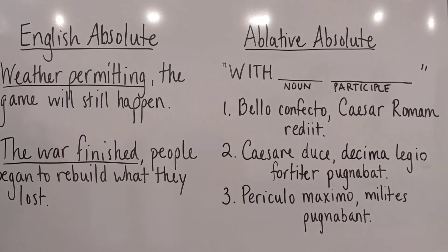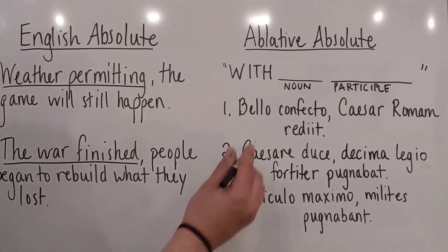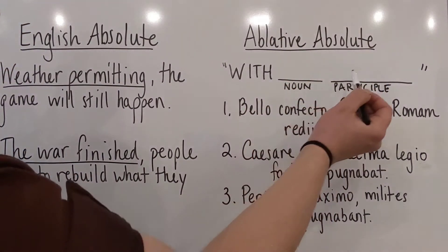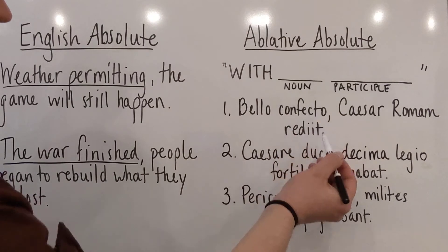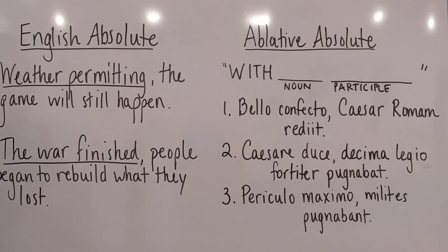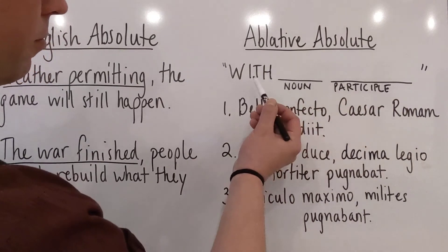Now you're probably wondering: how am I getting all of these translations from just these two words? Well, first start with the easy translation — with the noun participle, 'with the war having been finished, Caesar returned to Rome.' Then, as you get more comfortable and see more examples, you'll find there's a wide variety of ways to translate them. Your translation will rely upon context. As you get more experience, you'll be able to pick up on what the context is telling you. Until then, make sure you start with the easy translation: with the noun participle.